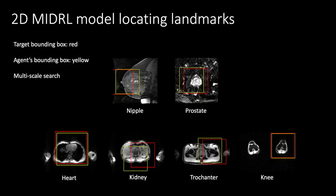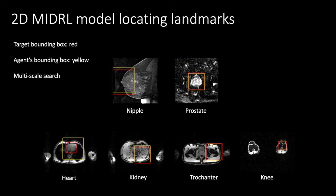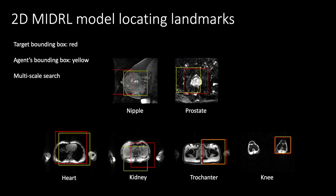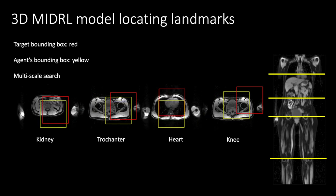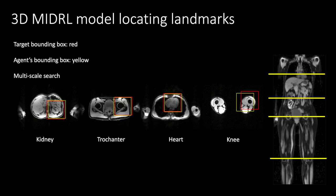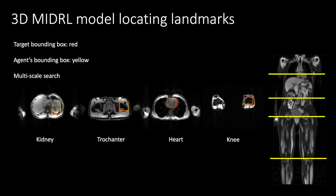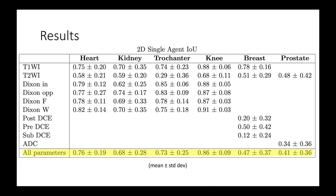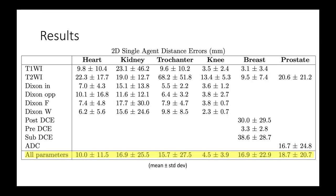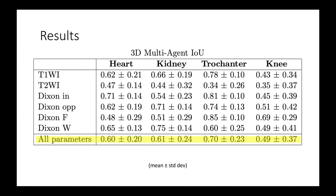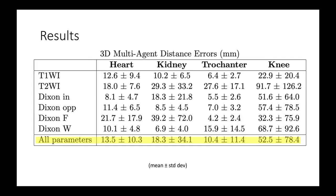Here is an example of the 2D single agent model locating target landmarks in separate runtimes. Here is an example of the 3D multi-agent model locating its target landmarks. The four landmarks shown in the video are all being located during one runtime of the multi-agent model. The figure on the right shows where in the whole body these landmarks are located. Our results show that the 2D single agent model adequately located its target landmarks. The 3D multi-agent model similarly located its target landmarks but had more trouble locating the knee — oftentimes the model would locate part of the thigh above the knee.